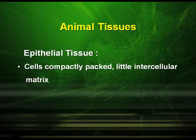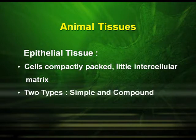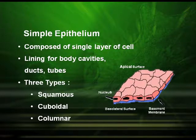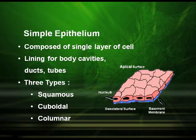Epithelial tissue is generally found in our skin. The cells here are compactly packed with little intercellular matrix. There are two types of epithelial tissues — simple and compound. Simple epithelium tissues are composed of a single layer of cells, found in the lining of body cavities such as ducts and tubes, and are divided into three types based on shape: squamous, cuboidal, and columnar.